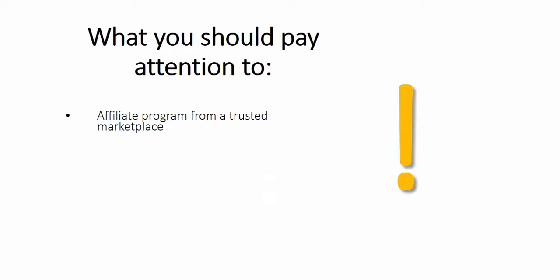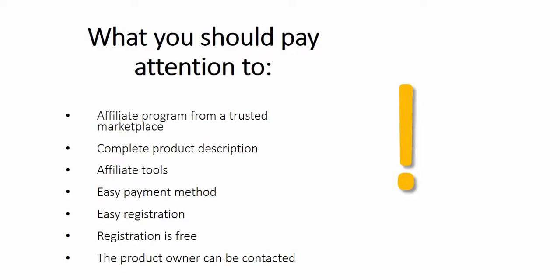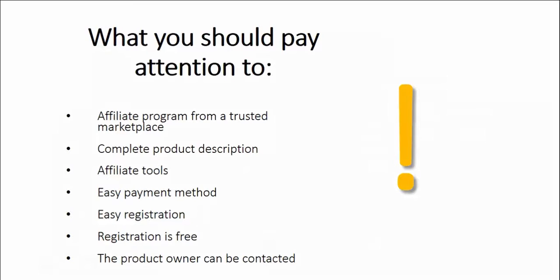Here's what you should pay attention to: affiliate program from a trusted marketplace, complete product description, affiliate tools, easy payment method, easy and free registration, and the product owner can be contacted. Keep all these points in mind while choosing affiliate offers to promote. Please proceed to the next video: Chapter 7, How to Promote Products on Warrior Plus.